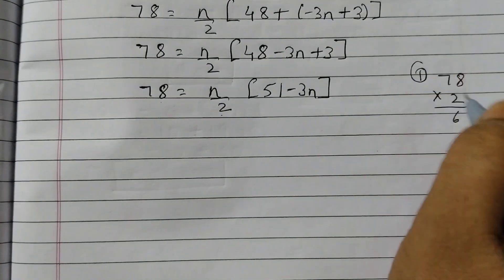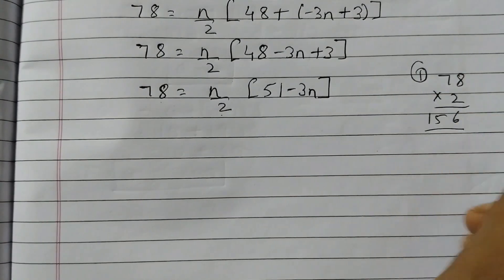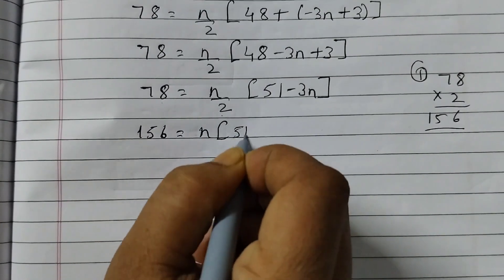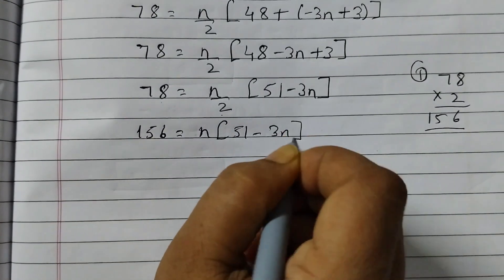78 times 2 is 156. So 156 is equal to n times 51 minus 3n.